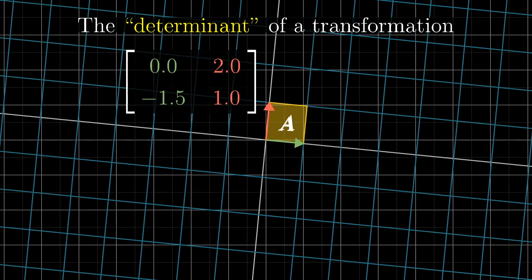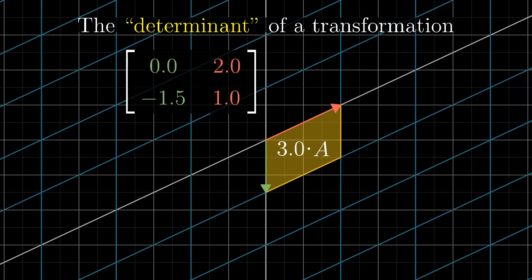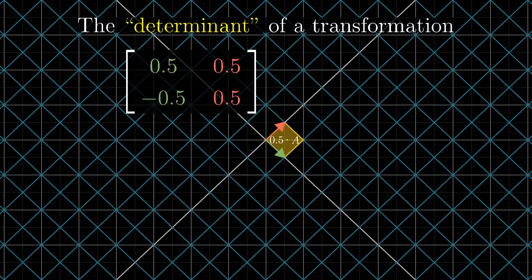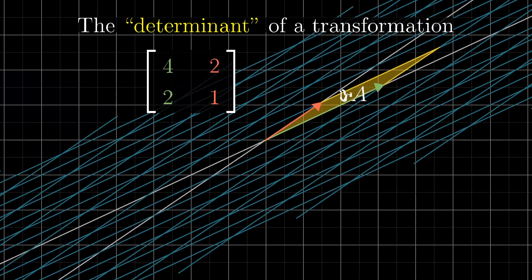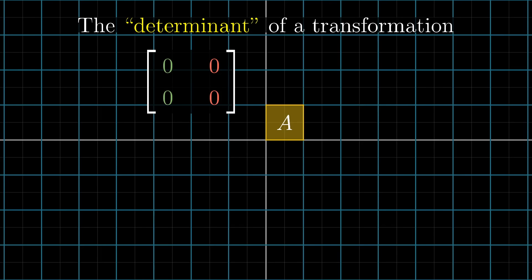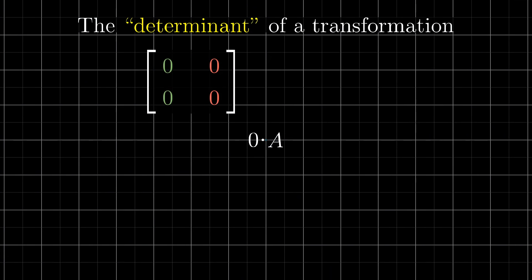For example, the determinant of a transformation would be 3 if that transformation increases the area of a region by a factor of 3. The determinant of a transformation would be 1 half if it squishes down all areas by a factor of 1 half. And the determinant of a 2D transformation is 0 if it squishes all of space onto a line, or even onto a single point. Since then, the area of any region would become 0. That last example will prove to be pretty important. It means that checking if the determinant of a given matrix is 0 will give a way of computing whether or not the transformation associated with that matrix squishes everything into a smaller dimension.